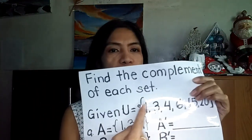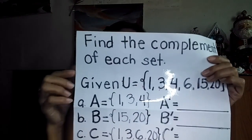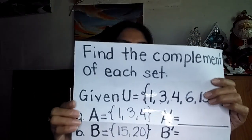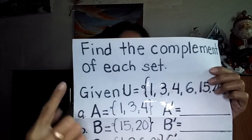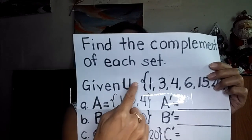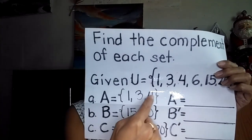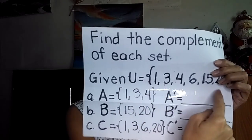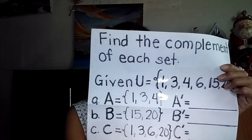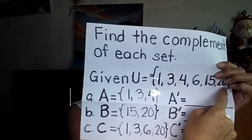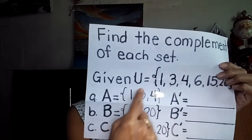So, how to do it? The clue words here, my dear parents, is when we are looking for the complement, the clue question is: what elements in the universal set are not in the given set? That's how to get the complement. Again, the question: what elements in the universal set are not in the given set? So we are going to cross out.